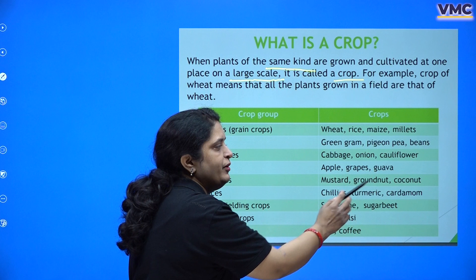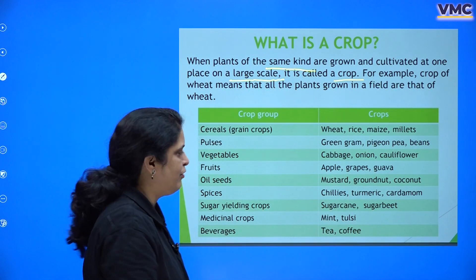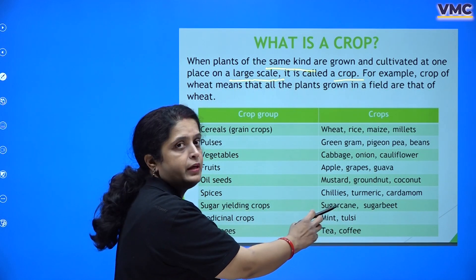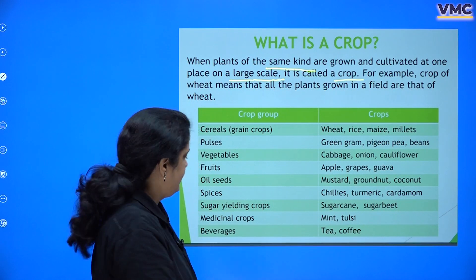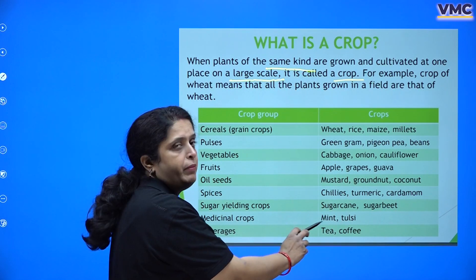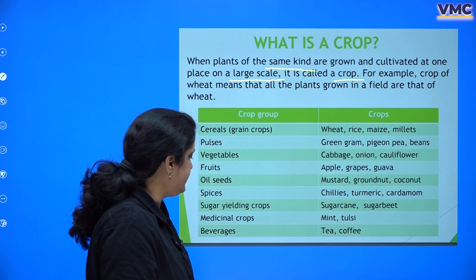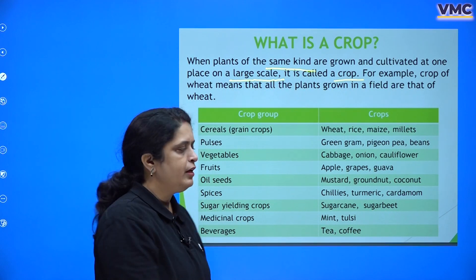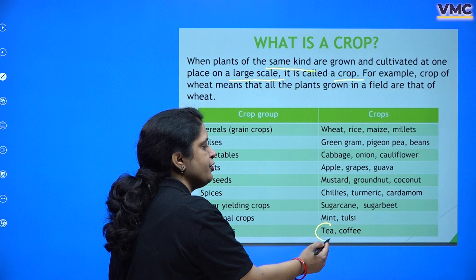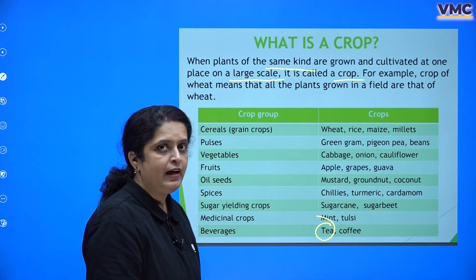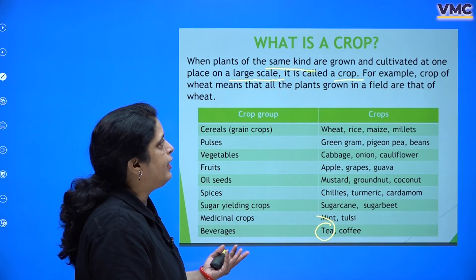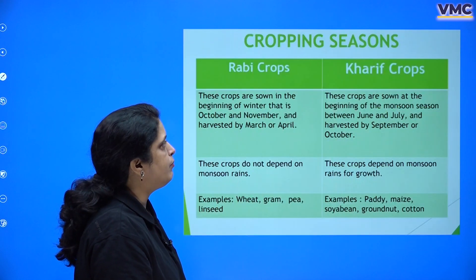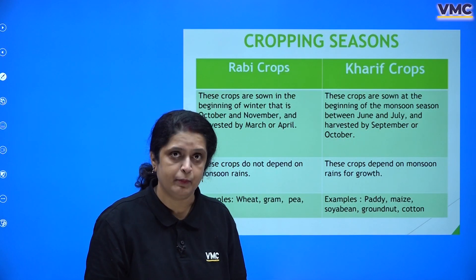Spices — chilies, turmeric, cardamom — Indians are known for these. Sugar-yielding crops include sugarcane and sugar beet. Medicinal crops include mint and tulsi. Beverages include tea and coffee — India is one of the leading producers of tea. So there are many categories of crops and we will learn more about how to cultivate them.